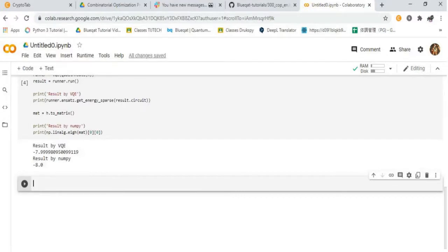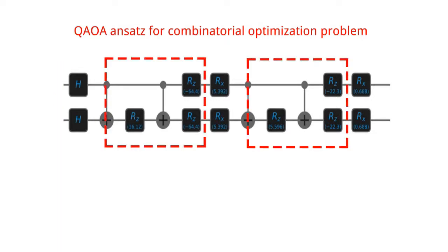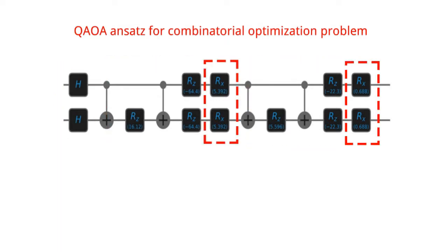To compute much more efficiently, we are using a new ansets called QAOA ansets for combinatorial optimization problem. The first H on the circuit shows the initial eigenstate of Hamiltonian X. CX, RZ, CX shows the weight of Hamiltonian and RZ shows the bias of the Hamiltonian. RX is a time evolution of initial Hamiltonian X. Let's just see the inside of QAOA ansets of BlueCat.